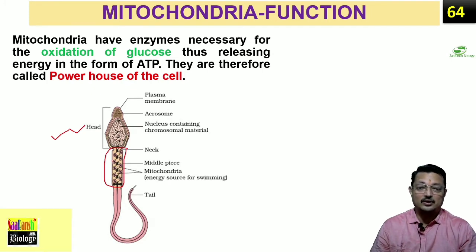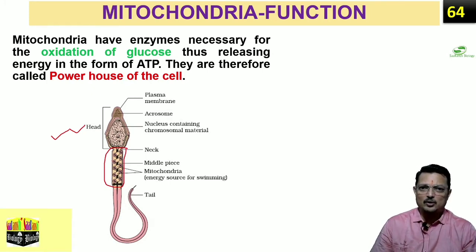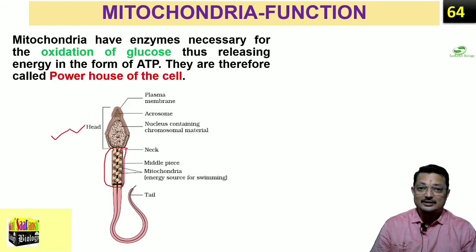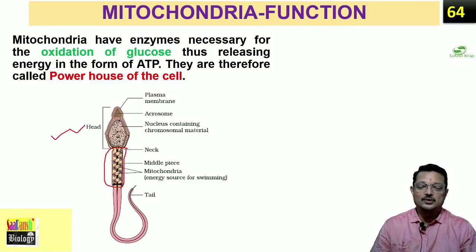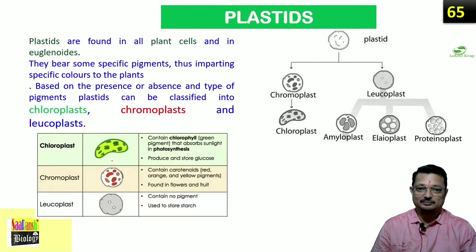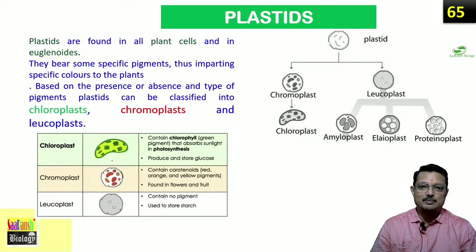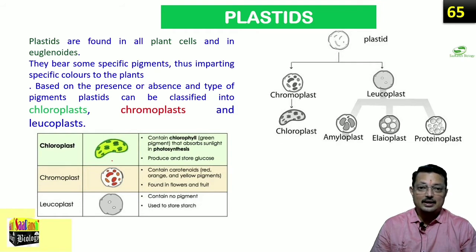Mitochondria is very very important. The more active the cell, the more mitochondria it will have in number. Now let's move to the next organelle — Plastids. Plant cells have some differences from animal cells, which we will discuss at the end of the video.